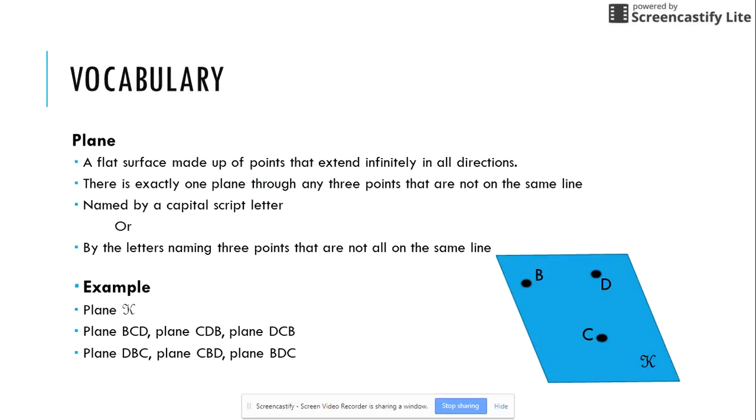A plane is a flat surface made up of points that extend infinitely in all directions. There is exactly one plane through any three points that are not on the same line. So B, C, and D create a plane because they are not collinear. I can name it by a capital script letter in the corner, so in this example it would be plane K, or I can pick the three letters that are here and arrange them in any order. The most common order would be alphabetical if I can do that, so it would be B, C, D. However, any of these other combinations would work to name this plane.